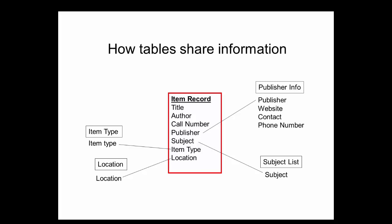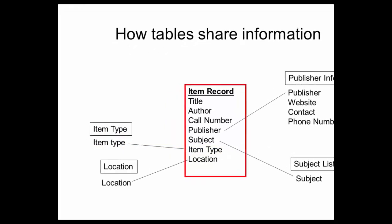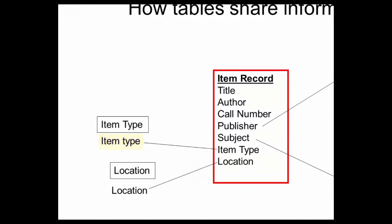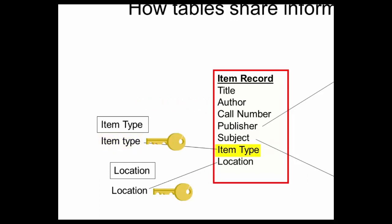And now a little database speak. When a field appears in two tables, it's given a special name depending on which table it's in. The field located in the source or parent table — for example, item type — is referred to as the primary key. The same field located in the child table is referred to as the foreign key. In the location table, which is a source table, the location field is considered the primary key. In the item record table, which pulls information from the location table, the location field is referred to as the foreign key.